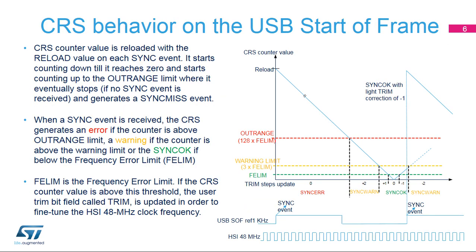The CRS counter value is reloaded with the reload value on each sync event. It starts counting down till it reaches zero, then starts counting up to the outrange limit where it eventually stops if no sync event is received before, and generates a sync miss event.